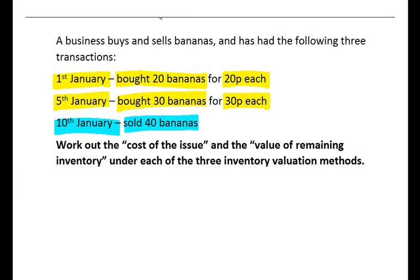And there are two figures we're interested in, the cost of the issue. Now the cost of the issue is the cost of what the 40 bananas they've sold originally cost them. And we've also got to work out the value of the remaining inventory. So the 10 bananas that are left at the end of January, what did they cost?